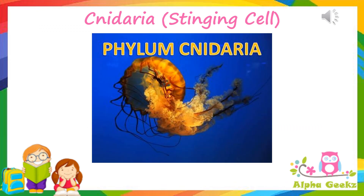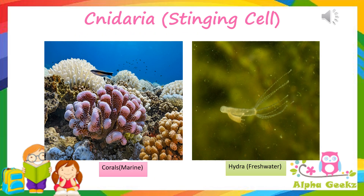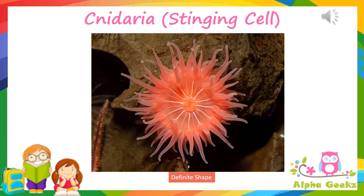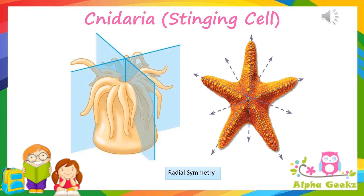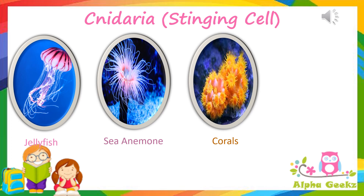Cnidaria: Cnidaria is a phylum under the kingdom Animalia. These are aquatic species seen in both marine and freshwater habitats. The name is derived from a Greek word 'cnidos' meaning stinging cells. They are characterized by special stinging structures in the tentacles surrounding the mouth. They are the simplest living organisms that have tissues and a definite shape. They are soft-bodied and radially symmetrical, meaning they can be divided into two identical halves by any plane passing through the central axis of the body. Examples include jellyfish, sea anemones, and corals as marine species, while hydras are the freshwater species.